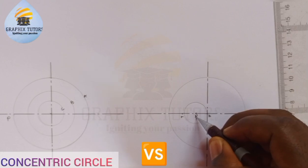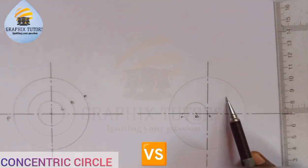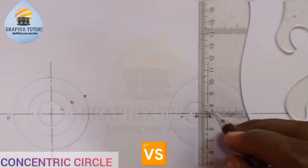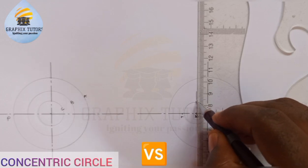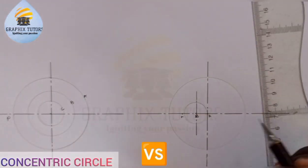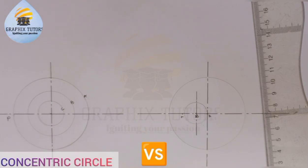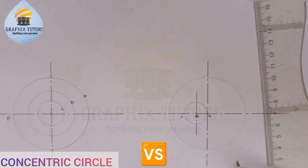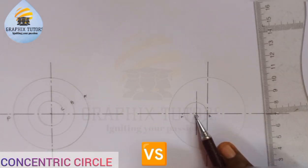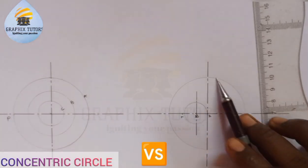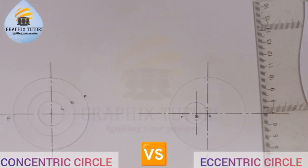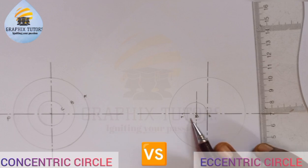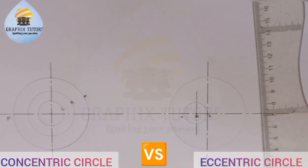It can be at any given distance. Let's say this is circle A and this is circle B. What do you notice? Circle A's center is here, circle B's center is here — they have two different centers. When two or more circles have different centers, we say that they are eccentric — they don't have the same center.